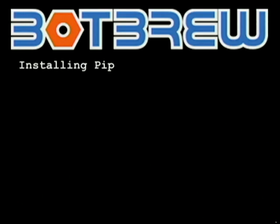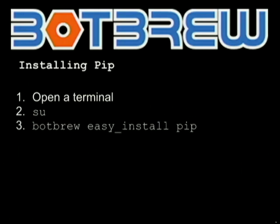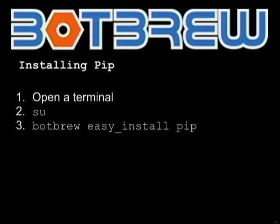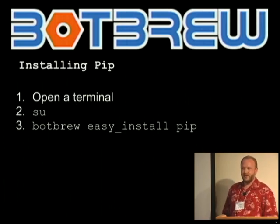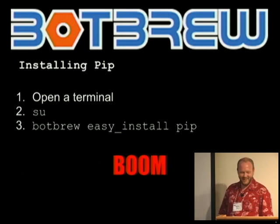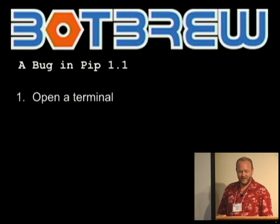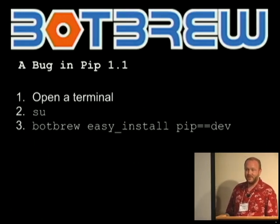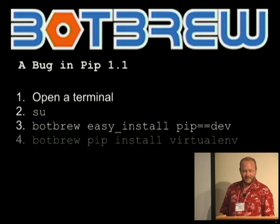Let's install PIP. We've got setup tools and easy install — PIP is a lot better. Open your Android terminal, go superuser, and run 'botbrew easy_install pip'. No — that fails. Why? There's a bug in PIP 1.1, the current version. To get around it, install the development version: 'botbrew easy_install pip==dev'. Now we can move on.